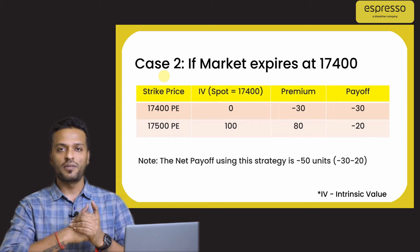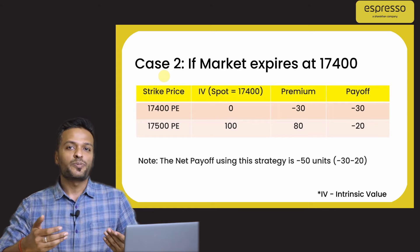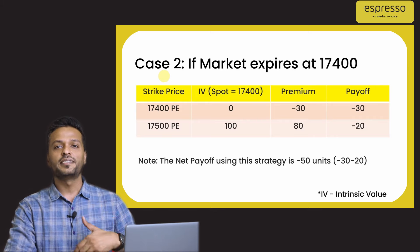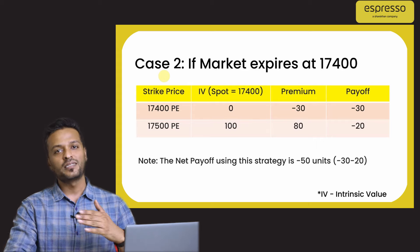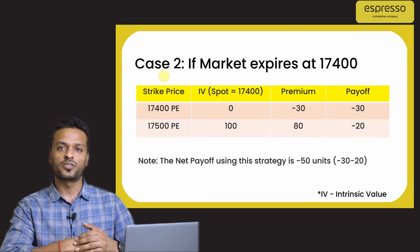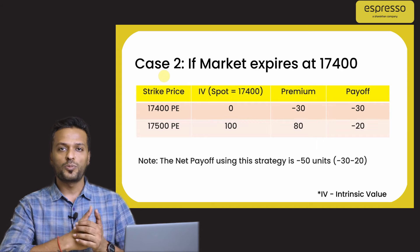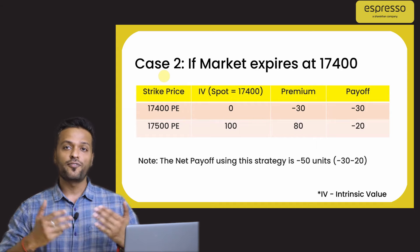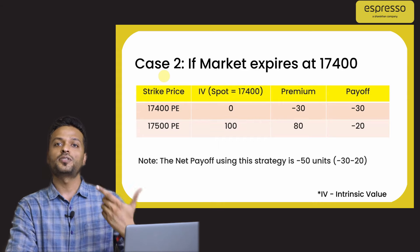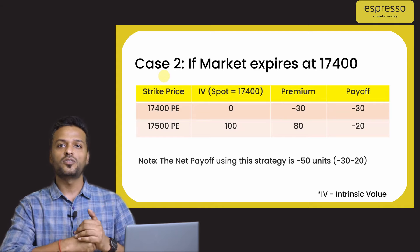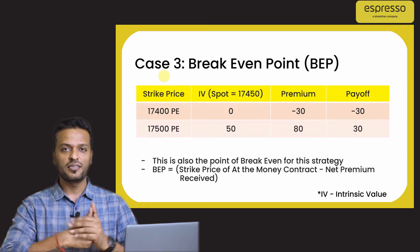Now say the market is moderately bearish and expires around 17,400. In that case, the 17,400 put option we bought expires at-the-money with zero intrinsic value, and the premium of 30 units paid becomes a loss. Similarly, the 17,500 put option expires in-the-money with an intrinsic value of 100 units, and since we received a premium of 80 units, this leg also gives a loss of 20 units. So we are losing money in both legs, and the overall loss at 17,400 expiry is 50 units.